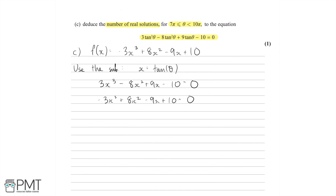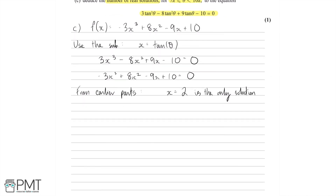We know how to factorise and solve this from earlier parts. The only real solution to f of x equals 0 is x equals 2. So what we really need to find is when tan theta equals 2 for the given range, and how many solutions we end up with.